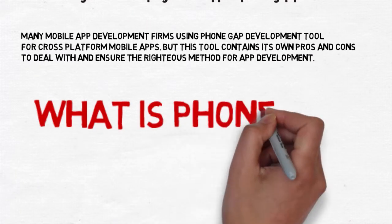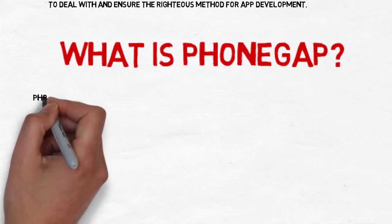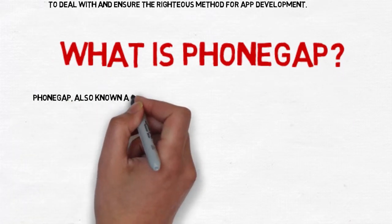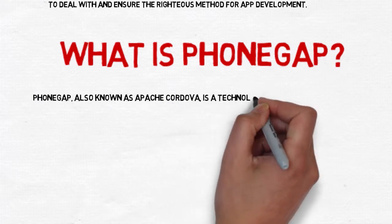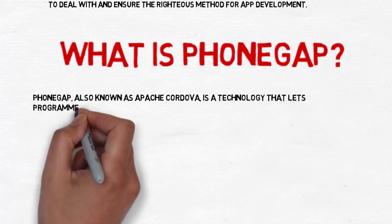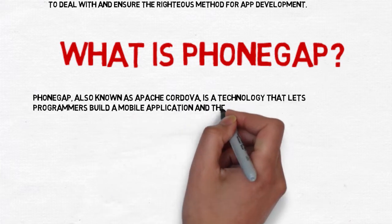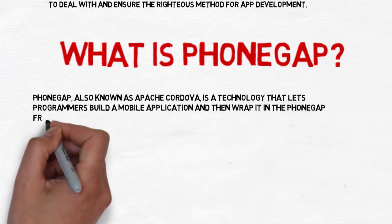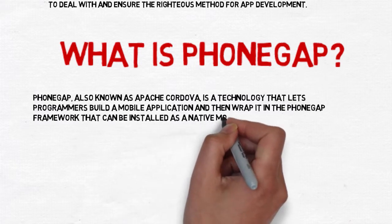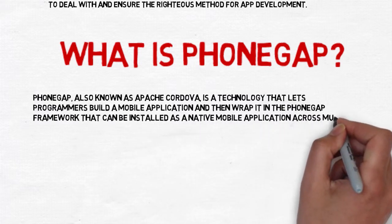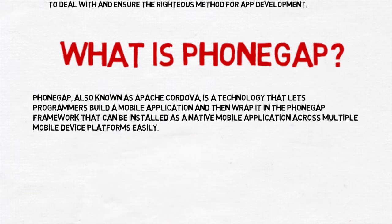PhoneGap, also known as Apache Cordova, is a technology that lets programmers build a mobile application and then wrap it in a PhoneGap framework that can be installed as a native mobile application across multiple device platforms easily.